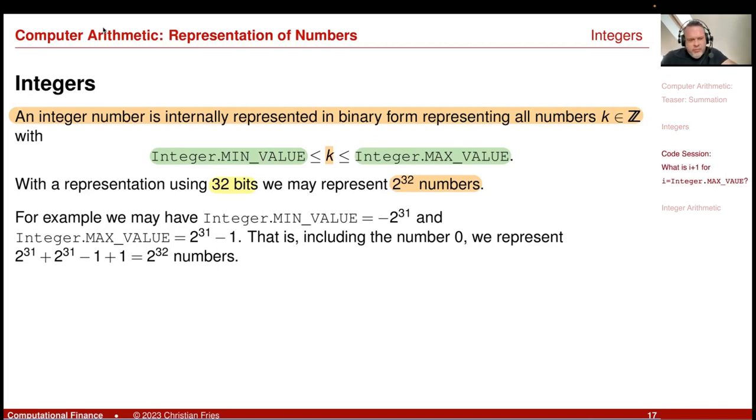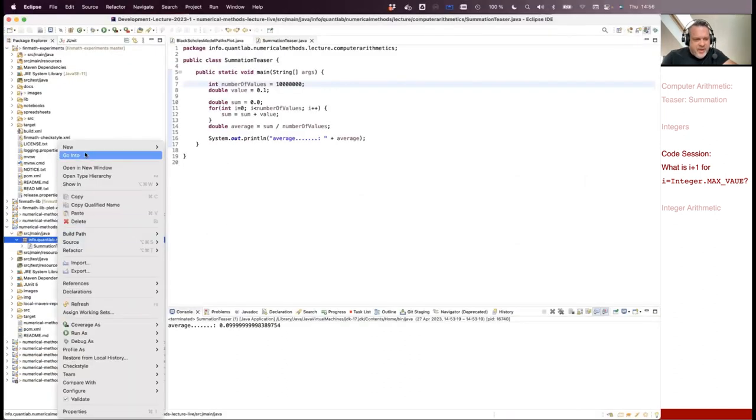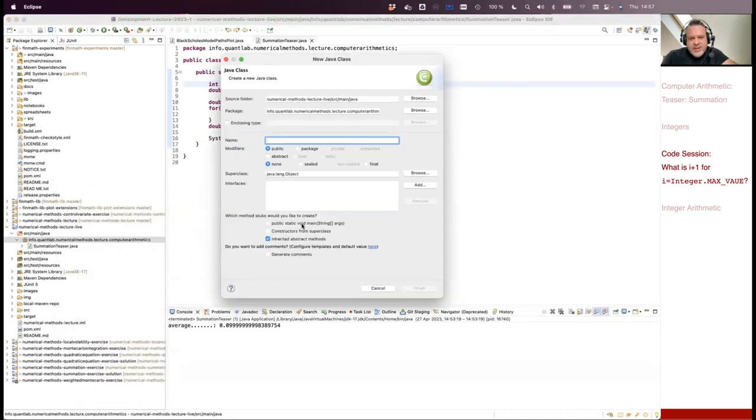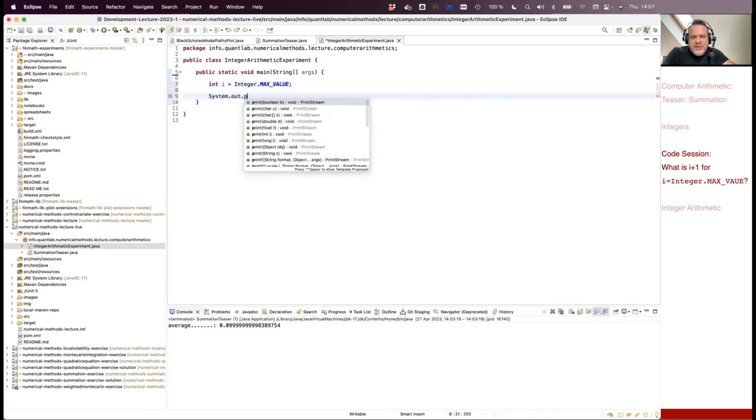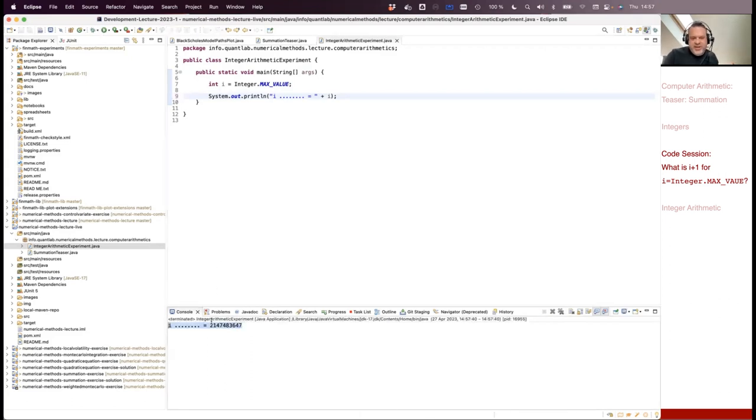The integer max value, maybe we have a look at it. But let's do some experiments. So I create a class. Let's call it integer arithmetic experiment. And you can print this. So what I wrote there on the slide is a constant in Java. So you can ask him, give me integer max value. And you can just print this number. So maybe I write here, I. So let's run this little program. And you see, you get this large integer number. And also if you hover over this max value, you see that he tells me it's 2 to the power of 31 minus 1.